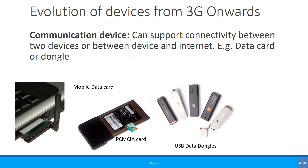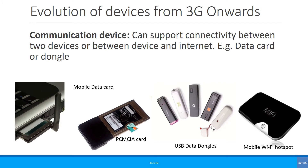More commonly, the USB dongle also provided connectivity and is widely used. Another category of device is the mobile Wi-Fi hotspot or MiFi. These have a SIM inside which creates a Wi-Fi hotspot for many devices to connect to.